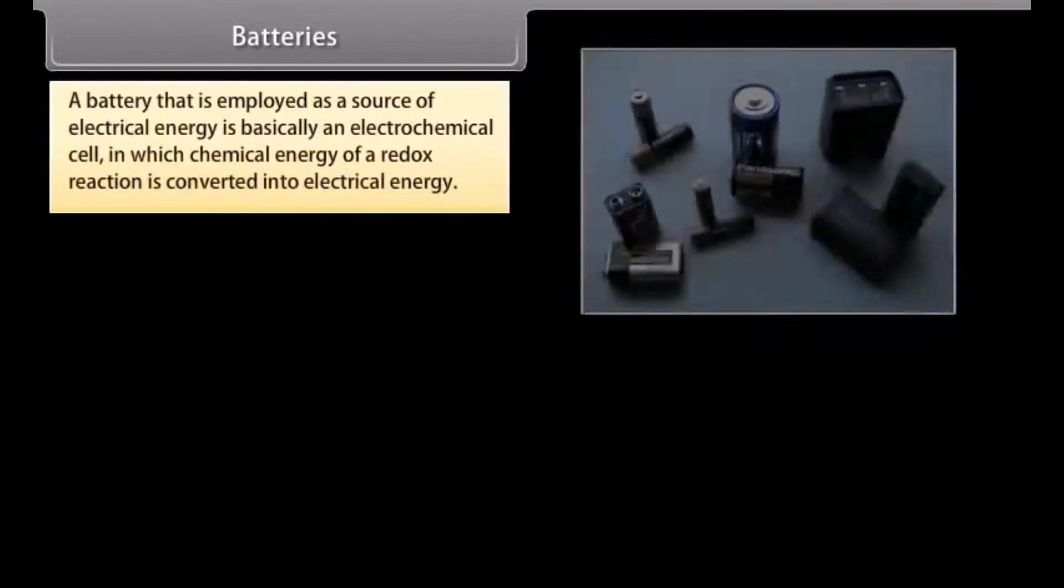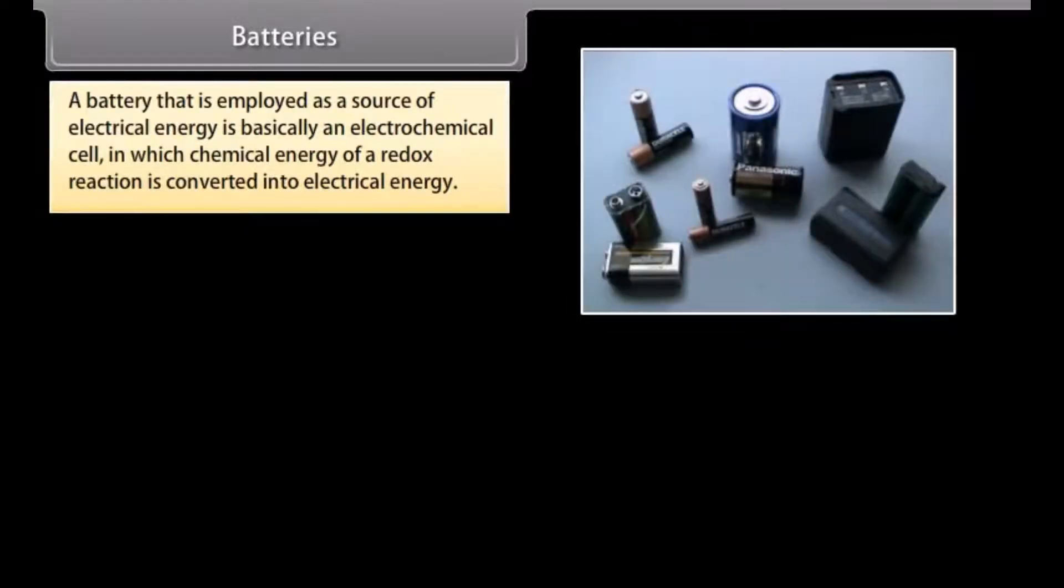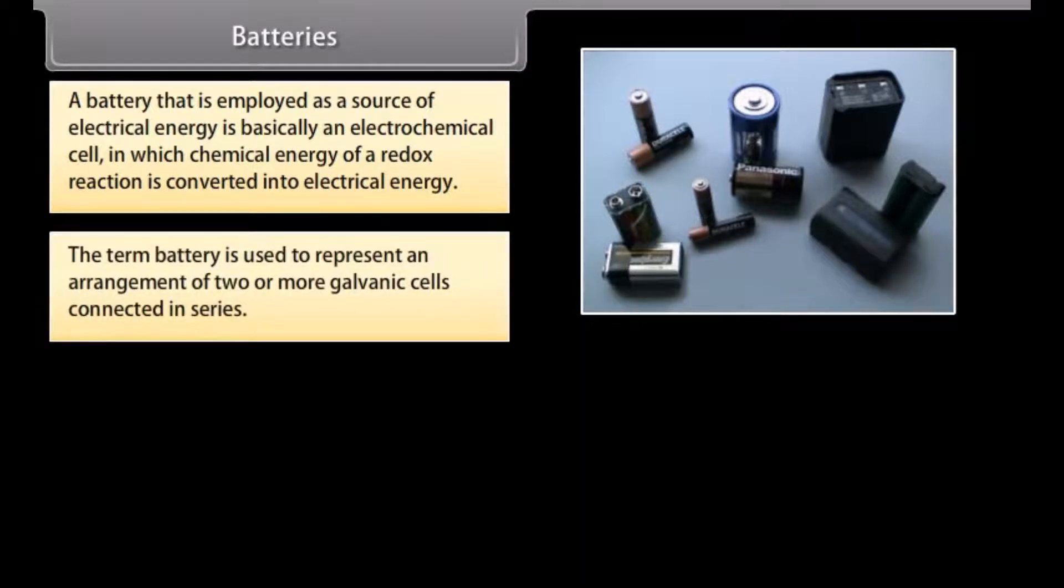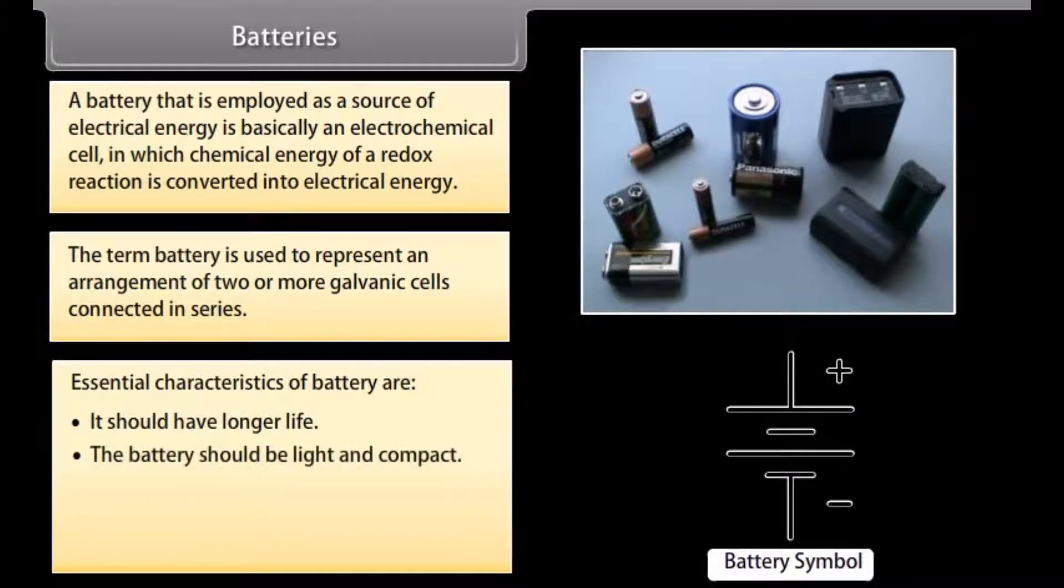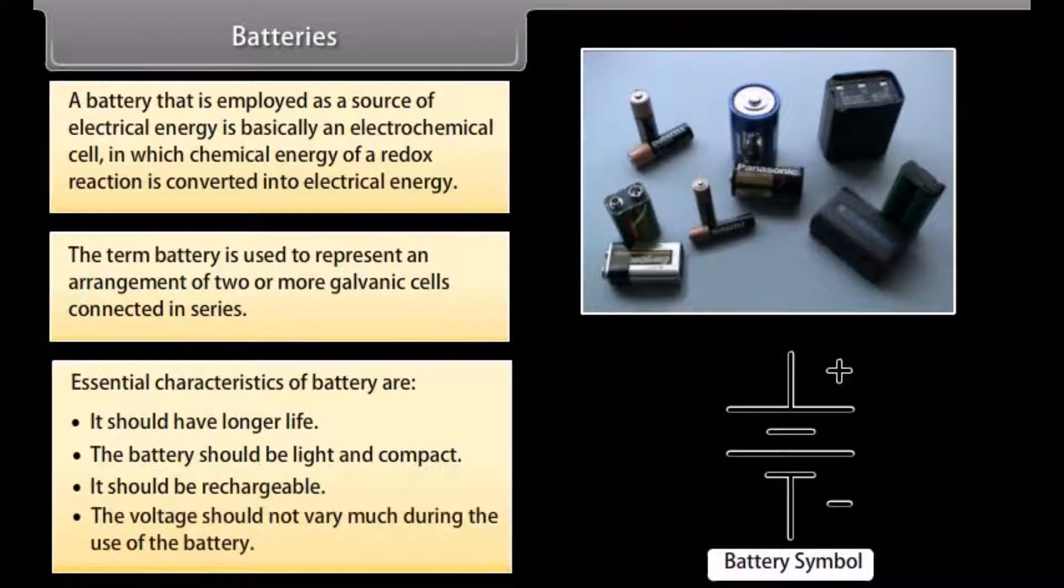Batteries. A battery that is employed as a source of electrical energy is basically an electrochemical cell in which chemical energy of a redox reaction is converted into electrical energy. The term battery is used to represent an arrangement of two or more galvanic cells connected in series. Essential characteristics of battery are: it should have longer life, the battery should be light and compact, it should be rechargeable, and the voltage should not vary much during the use of the battery.